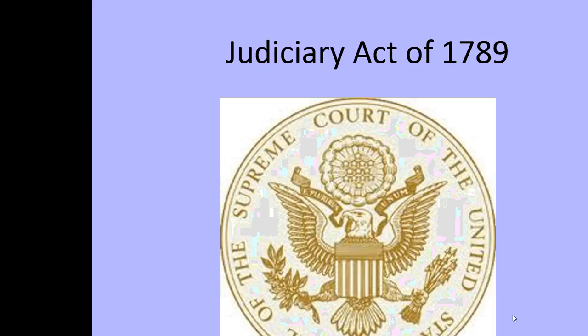One of the first things passed under George Washington's presidency was the Judiciary Act of 1789. While the Constitution did establish the judicial branch, it didn't go into specific detail or establish the detailed court system we have today. The Judiciary Act of 1789 set up our court system: the district courts, the Court of Appeals, and the Supreme Court.